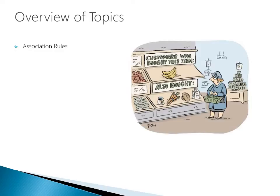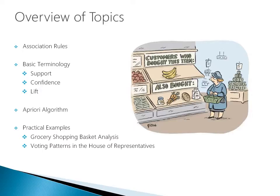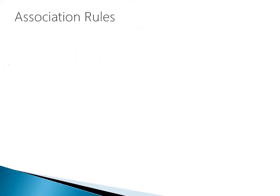The overview of topics we're going to go over today includes an introduction to association rules, basic terminology needed to interpret association rules, the a priori algorithm, and then some practical examples including a grocery shopping basket analysis and a voting pattern in the House of Representatives example.